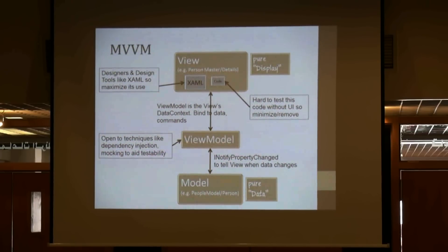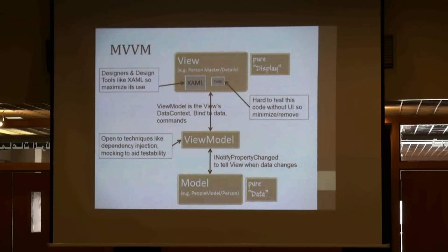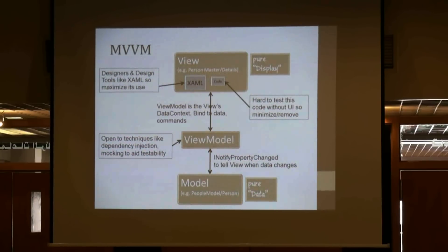The communication between the two: the view model has a reference to the model, and the view has a reference to the view model. It's a top-down relation. The view accesses the view model, the view model accesses the model. The interaction between the view model and the view is through data binding. Your view says its DataContext is the view model, meaning the object used as a source of data is the view model. Through data binding, we will see how we can achieve that.